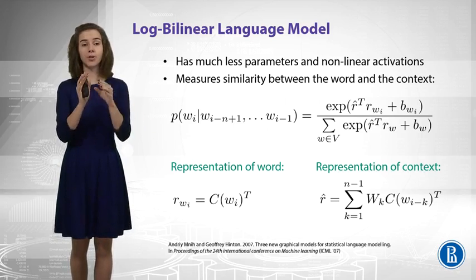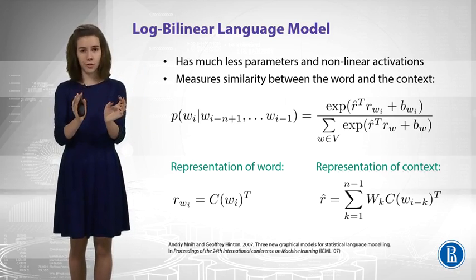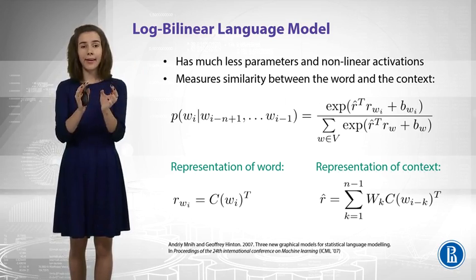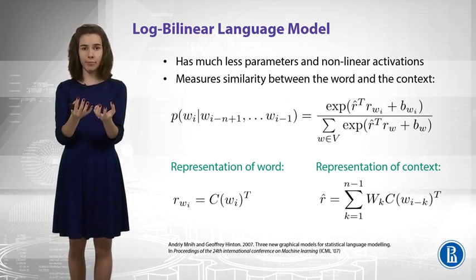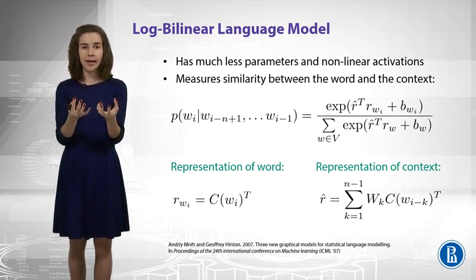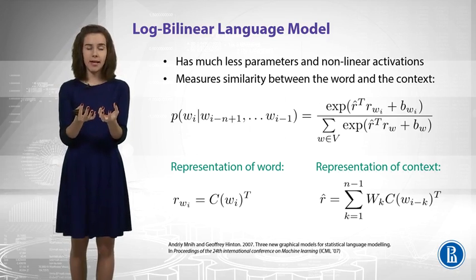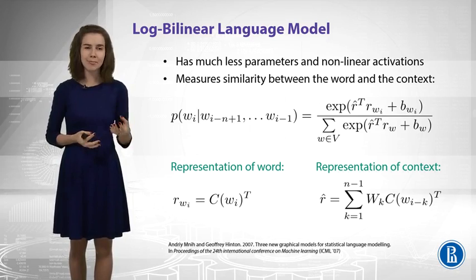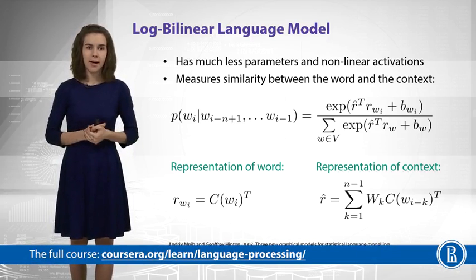Okay, so you get your word representation and context representation. And then you just have dot product of them to compute this similarity. And you normalize this similarity. So, the model is very intuitive. It predicts those words that are similar to the context.